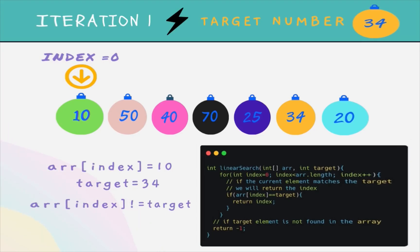Let's take an example where the target number is 34 and we are given an array. We start the index from zero and iterate over the whole array. In iteration one, array at index zero is equal to 10, which is not equal to our target, so we increment the index.